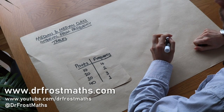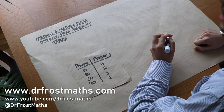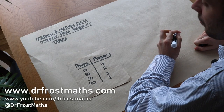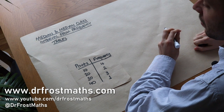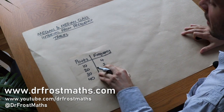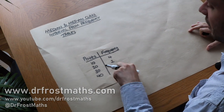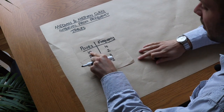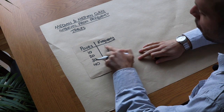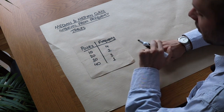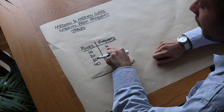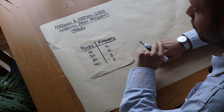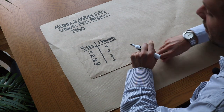Hello and welcome to this video on finding the median and median class interval from frequency tables. Let's say we've got this frequency table here with different numbers of points and the number of people with each of those points. We've got four people with 10 points, two people with 20 points, etc.